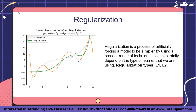Regularization is a process of artificially forcing a model to be simpler by using a broader range of techniques. This can depend on the type of learner being used — for example, we can prune a decision tree, use dropout on a neural network, or add a penalty parameter to the cost function in regression. Regularization is often a hyperparameter as well, meaning it can also be tuned through cross-validation.